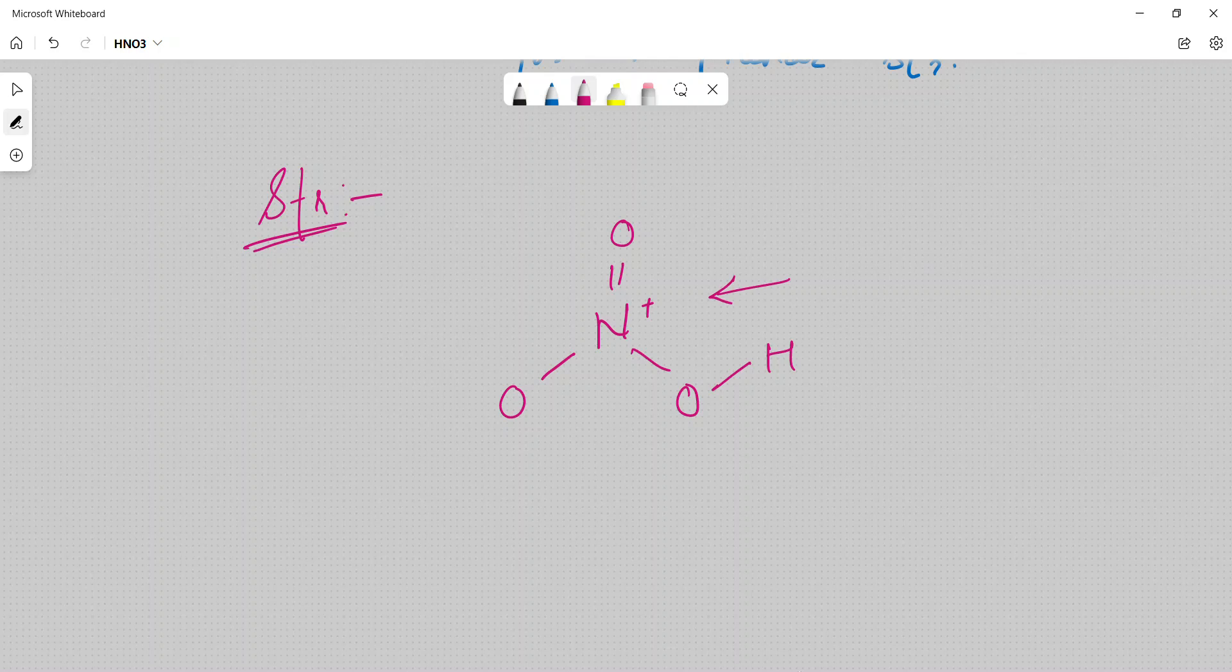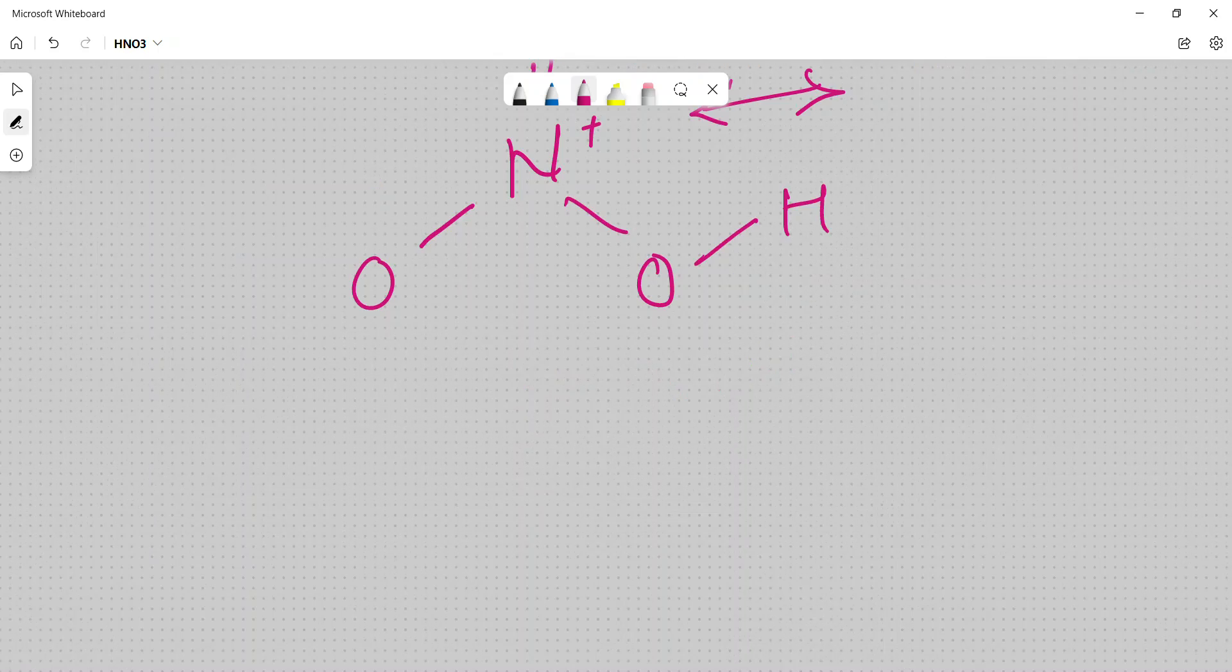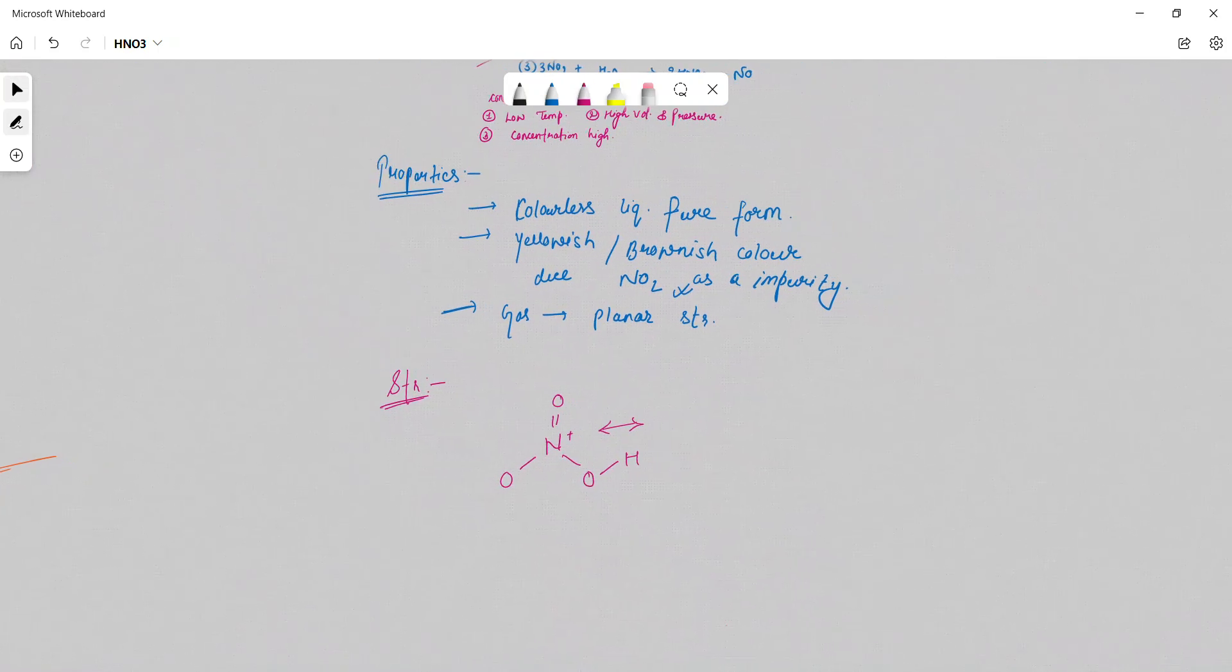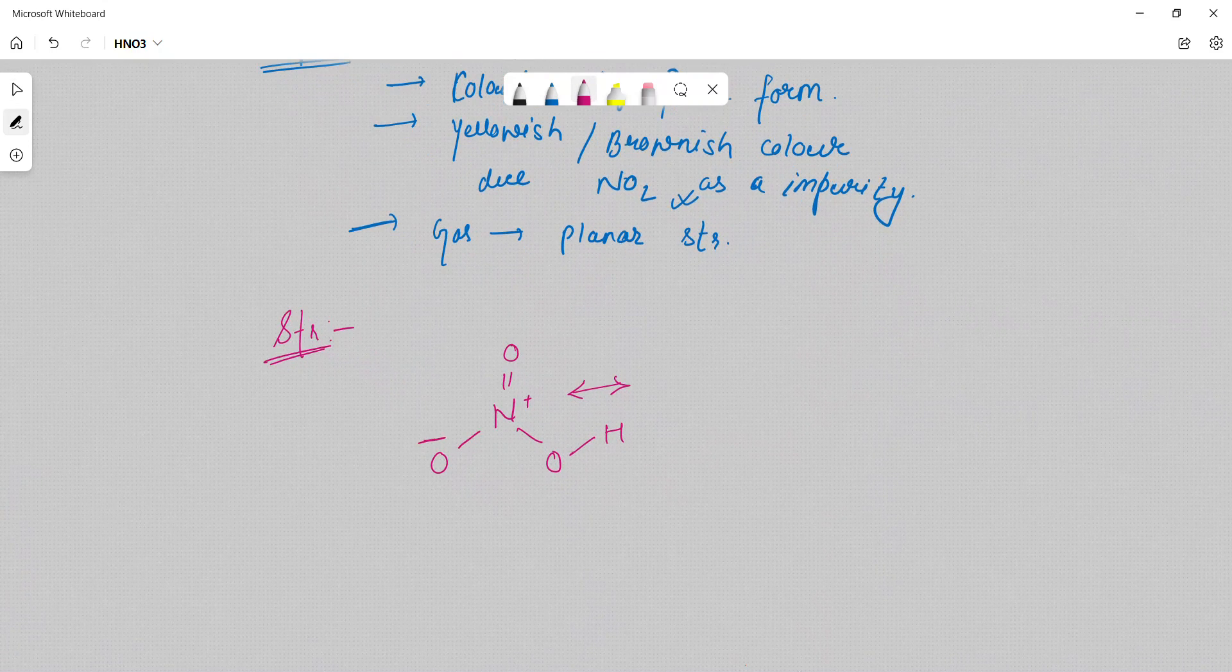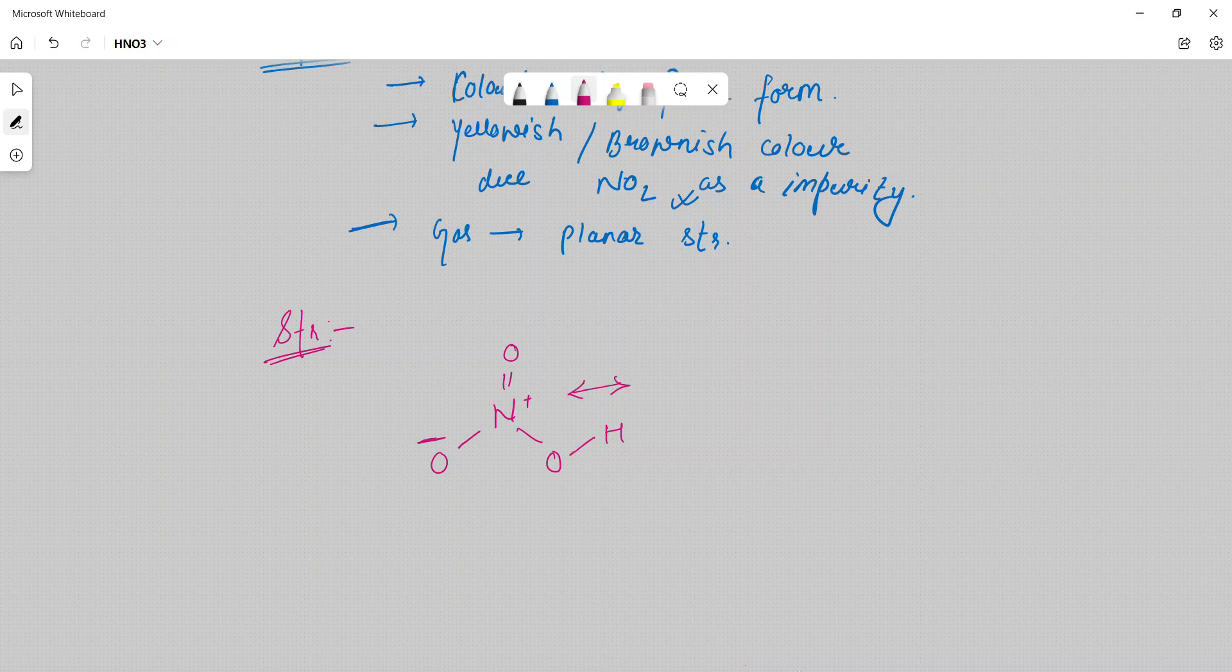And if this is a resonating structure, it will become a negative sign. So this will go here and this will go here. This will become O minus double bond O, single bond O, H. This is our structure, HNO3.